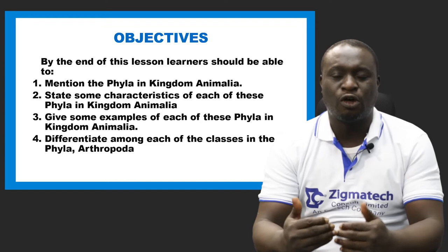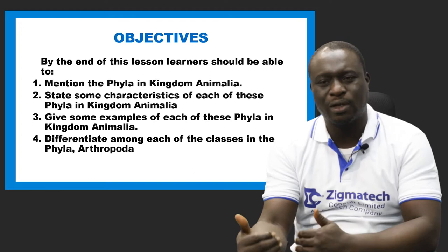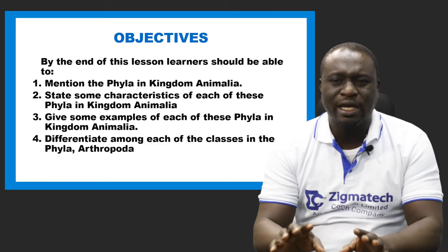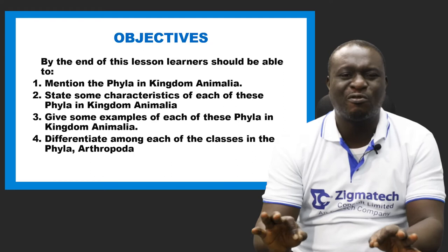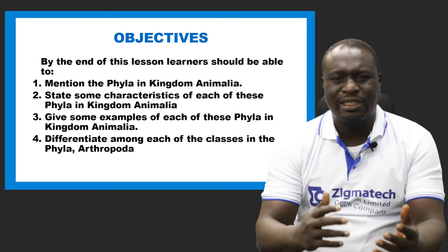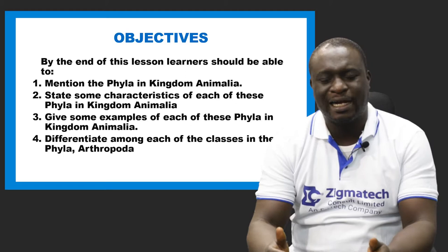Number three is that you should be able to give some examples of each of these phyla — examples of organisms that you can find in each phylum in kingdom Animalia. Number four is that you should be able to differentiate among each of the classes in phylum Arthropoda. We're going to be discussing a little bit more on phylum Arthropoda, and you should be able to differentiate each of its classes by the end of this class.